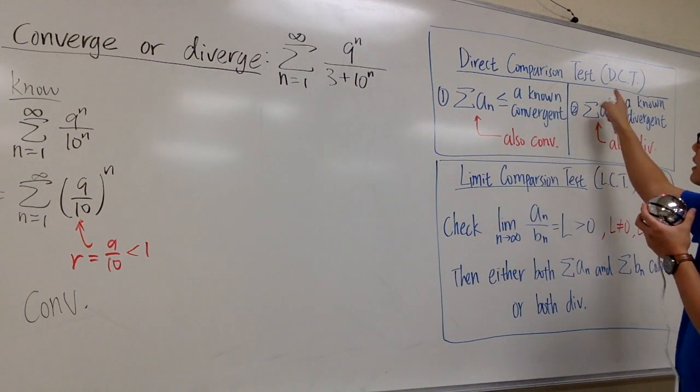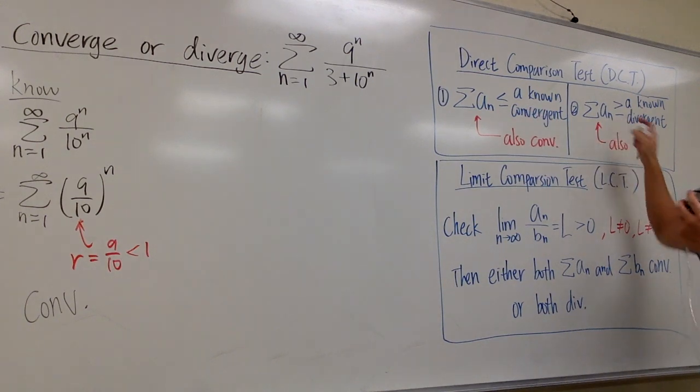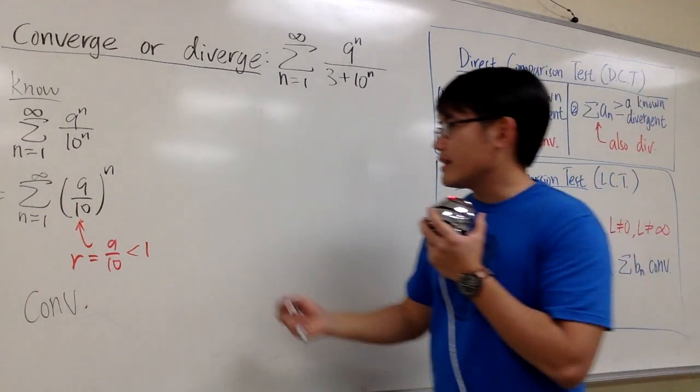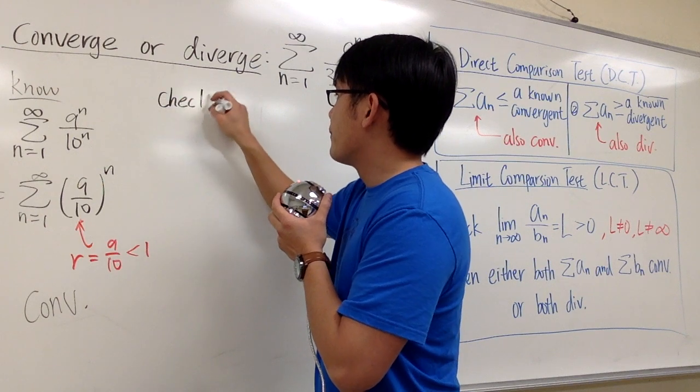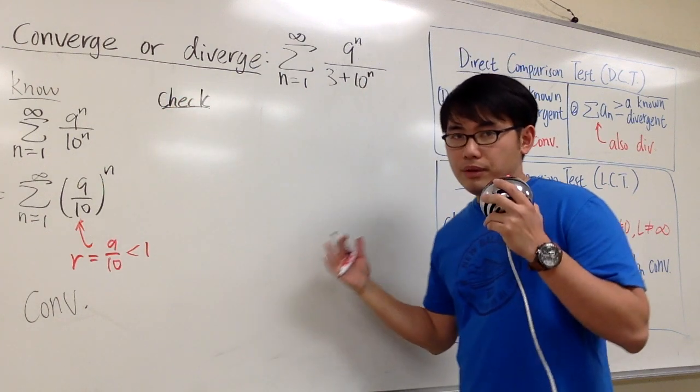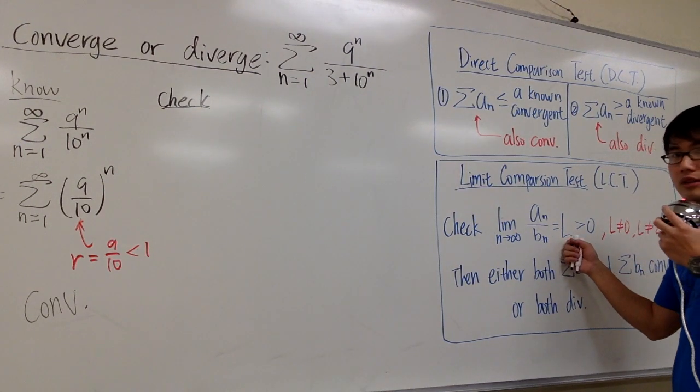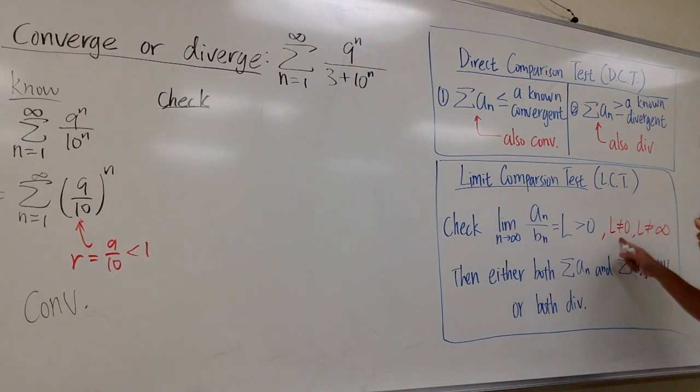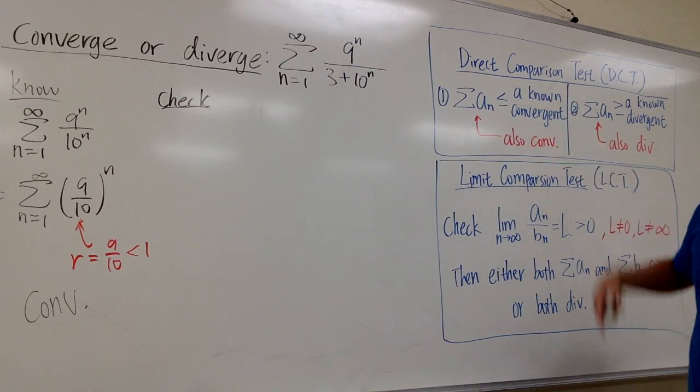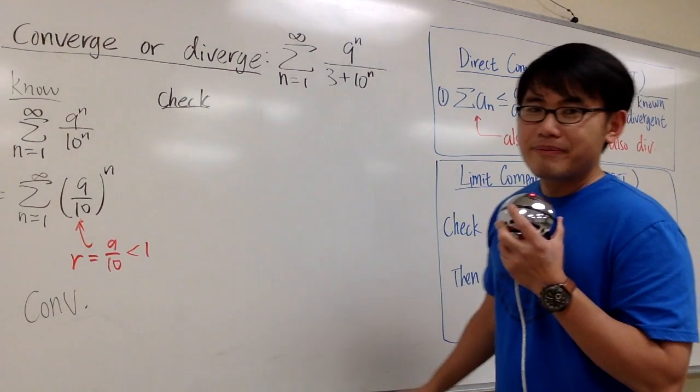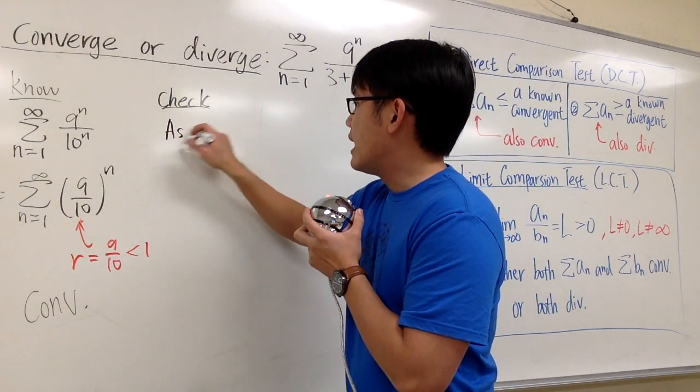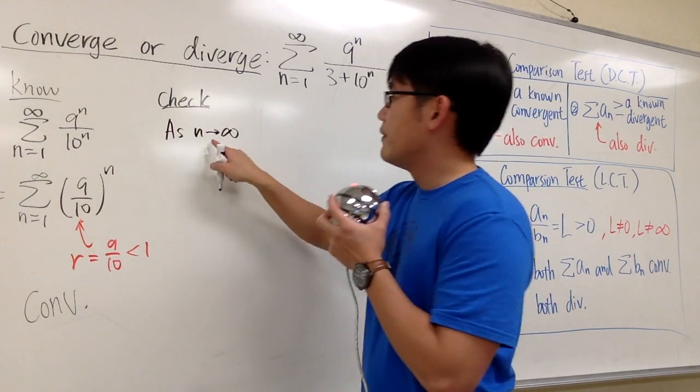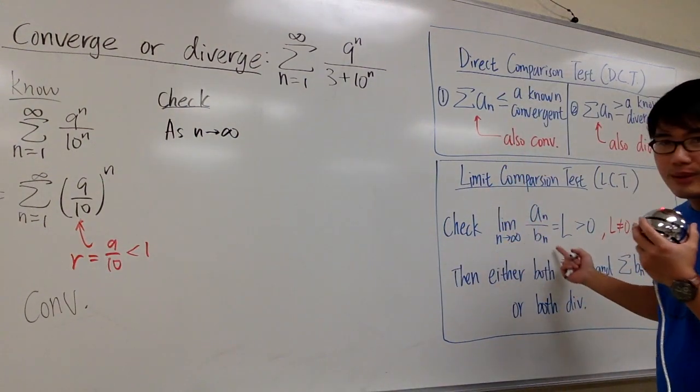And if you want to do the direct comparison test, then we are going to check inequalities. Now let's just do the check, and we'll use the limit comparison test. If it doesn't work, such as if we don't get a nice answer, if the limit may be 0 or infinity, then maybe we can just switch to the direct comparison test. But hopefully it works. So to check, I will just put down as n goes to infinity. This is a shorter way to write down the limit.